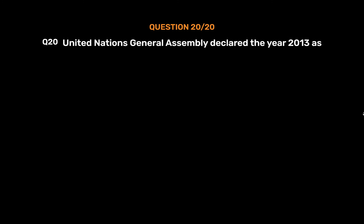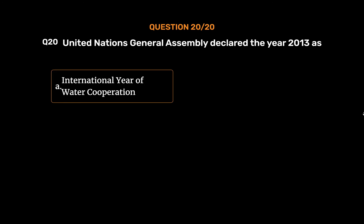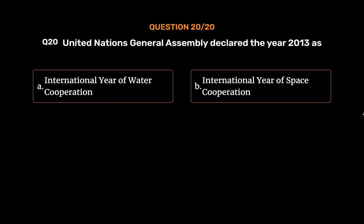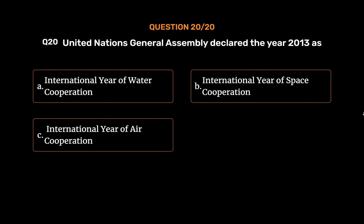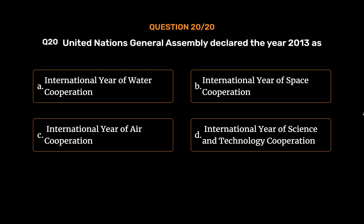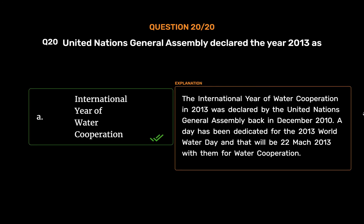Question No. 20: The United Nations General Assembly declared the year 2013 as: Option A, International Year of Water Cooperation; Option B, International Year of Space Cooperation; Option C, International Year of Air Cooperation; Option D, International Year of Science and Technology Cooperation. The correct answer is Option A, International Year of Water Cooperation. This was declared by the United Nations General Assembly in December 2010, with World Water Day 2013 observed on 22 March 2013.